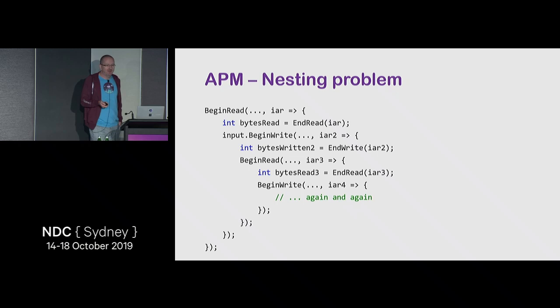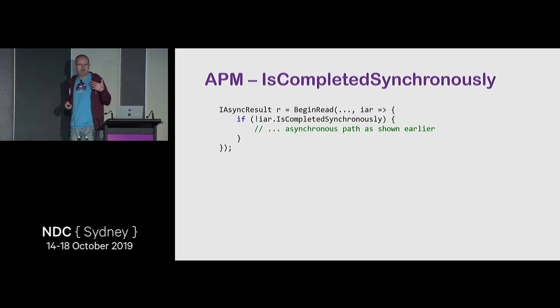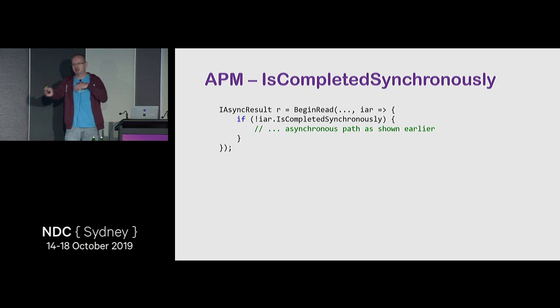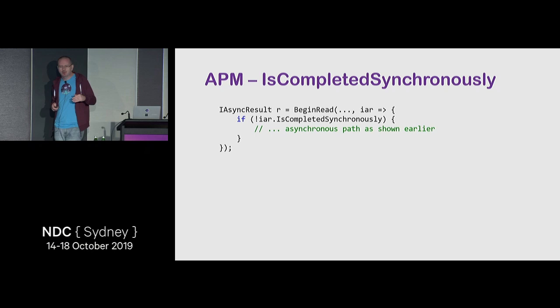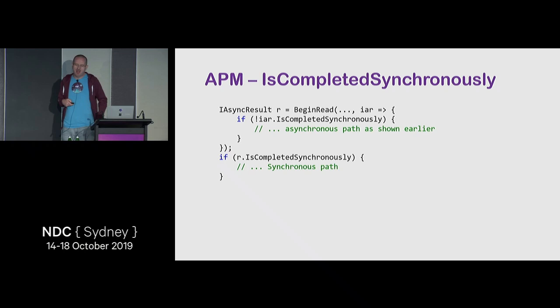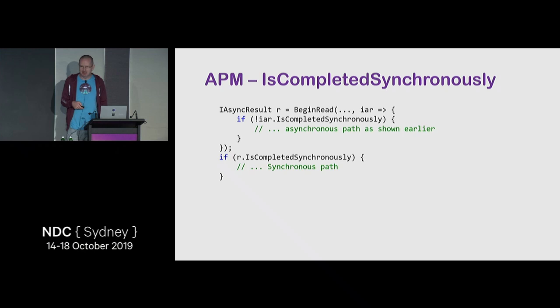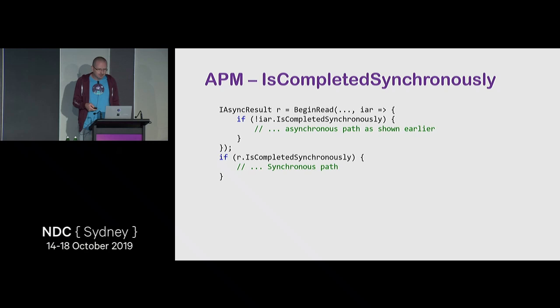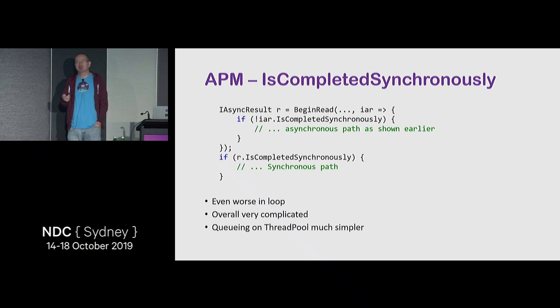Dealing with synchronous completion is important for performance: if data is available, instead of scheduling on the thread pool, just handle it immediately. Good code would check inside the callback: did it complete synchronously? If not, take the async path; otherwise fall back to a different synchronous path. Many BCL functions around networking have exactly this pattern. But this makes the loop even more complicated — another level entirely. So that's a no-go.